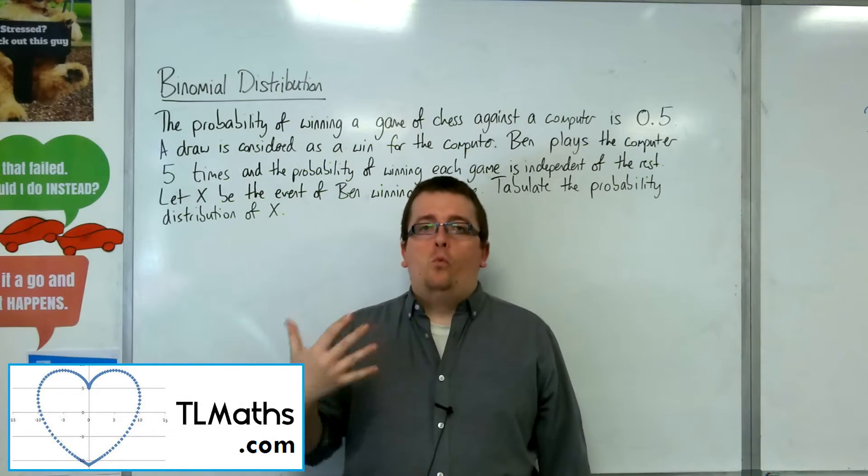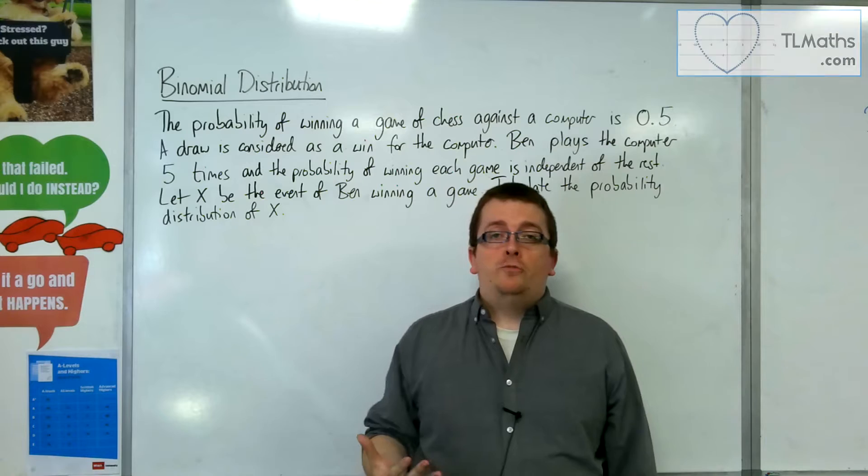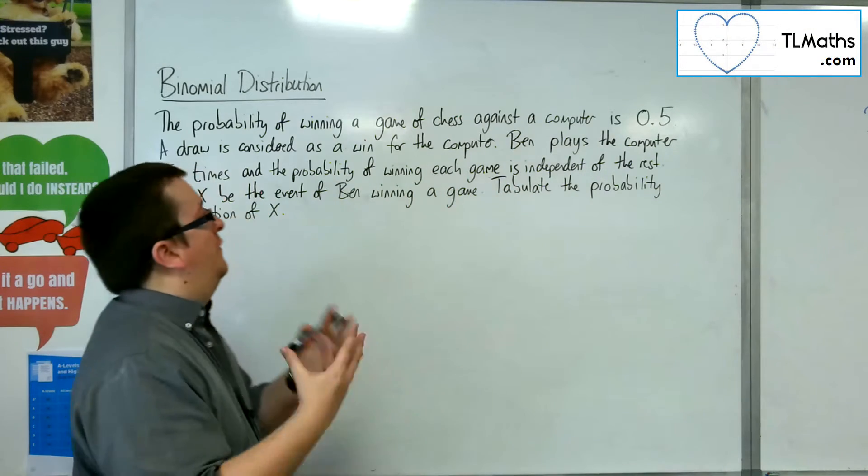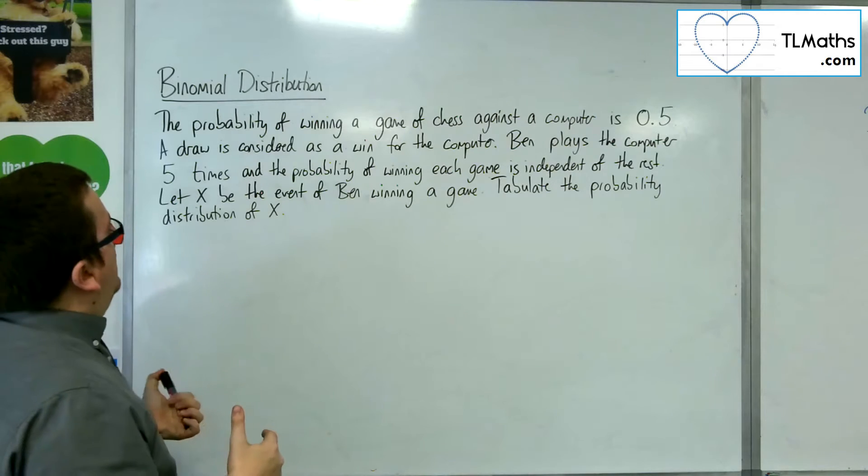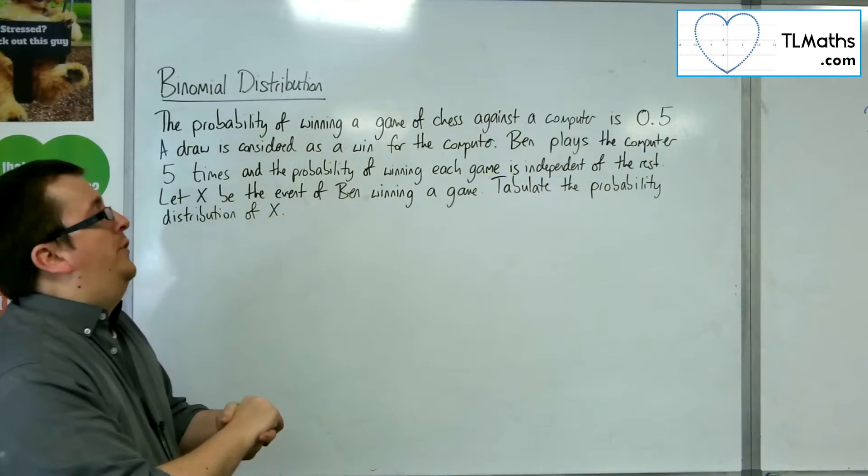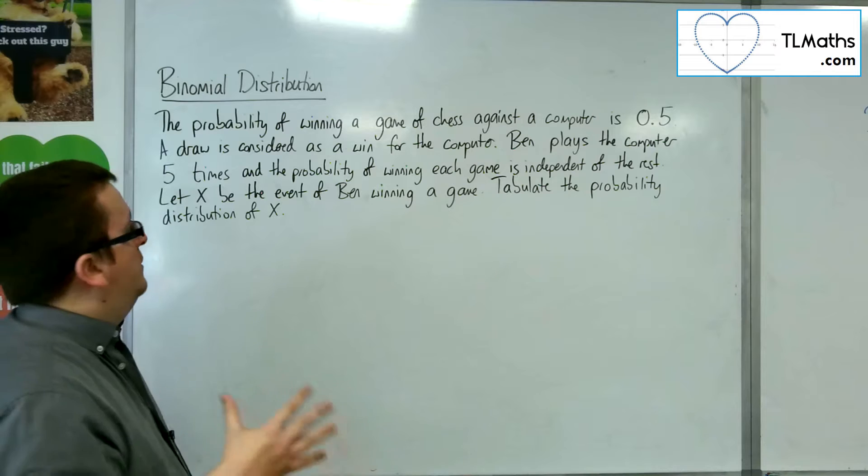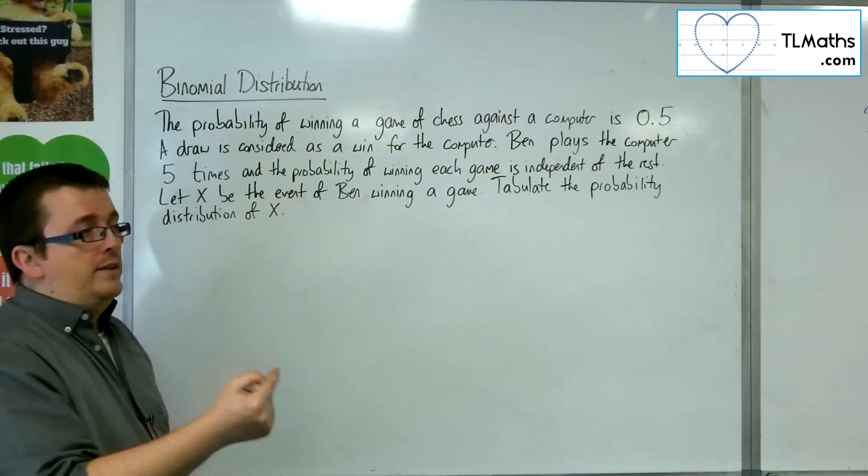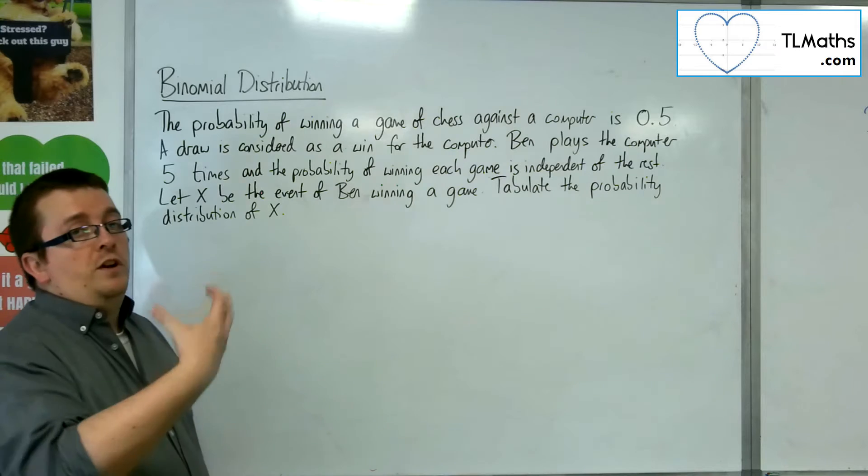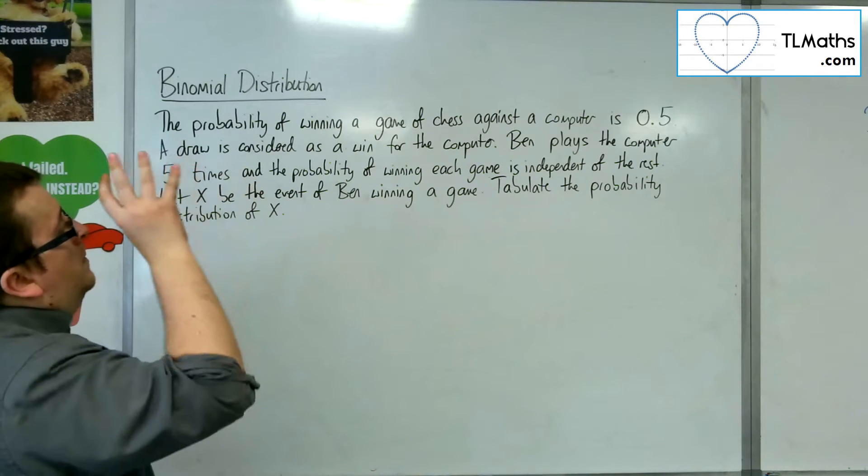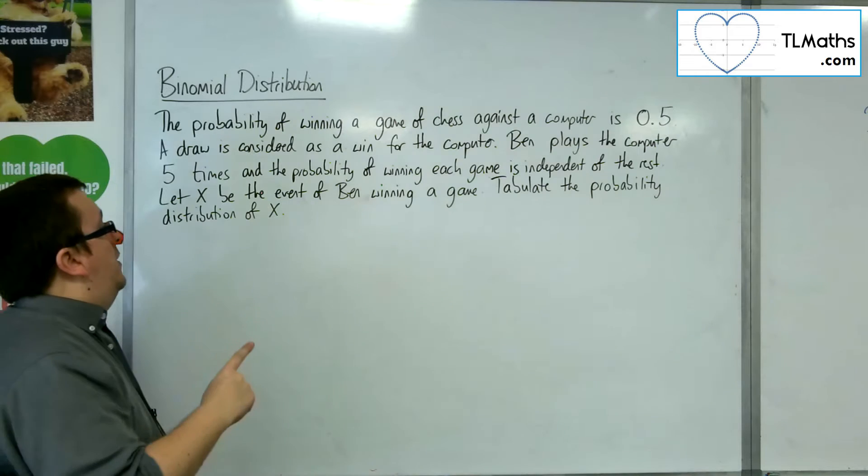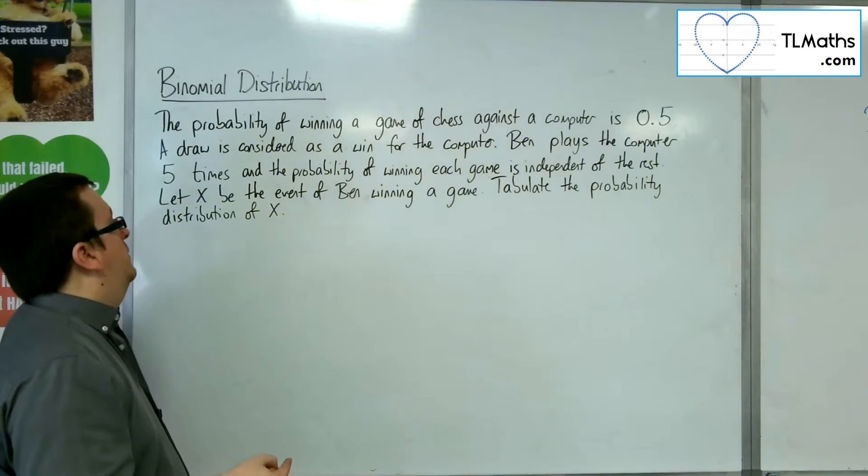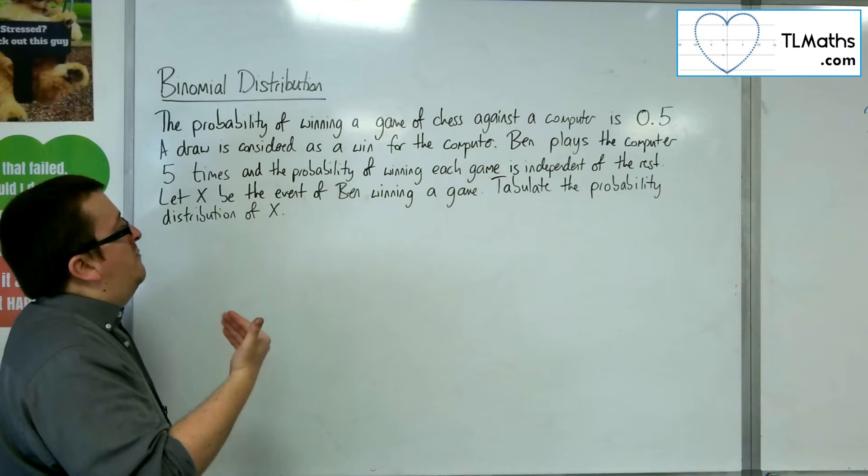In this video I want you to see what the binomial distribution actually looks like, and we're going to look at it through the eyes of an example. So the probability of winning a game of chess against a computer is 0.5. A draw is considered as a win for the computer, so you can either win or lose. Ben plays the computer five times, and the probability of winning each game is independent of the rest. Let X be the event of Ben winning a game.